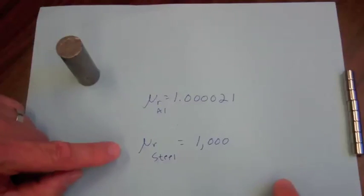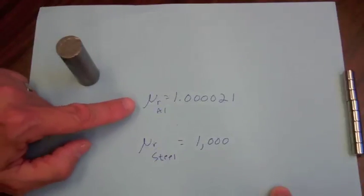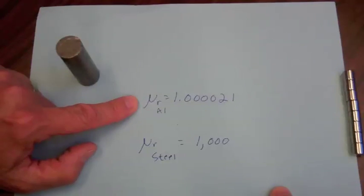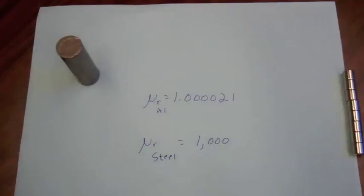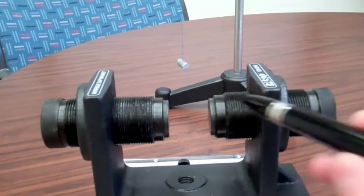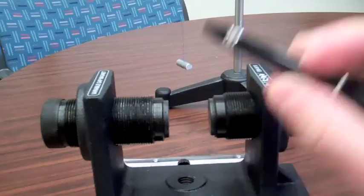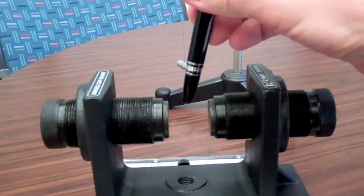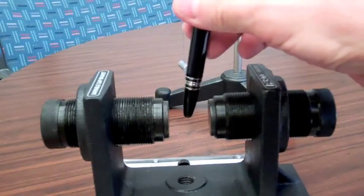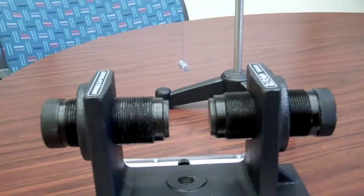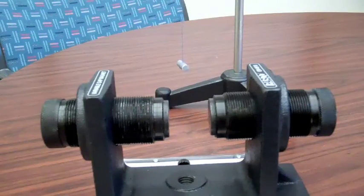But I want to show you an experiment that will demonstrate that there is a slight magnetization of aluminum when the aluminum is placed in a magnetic field. I have a variable gap magnet here that produces about a half a Tesla magnetic flux density in the center of this gap. That's a very large magnetic field.